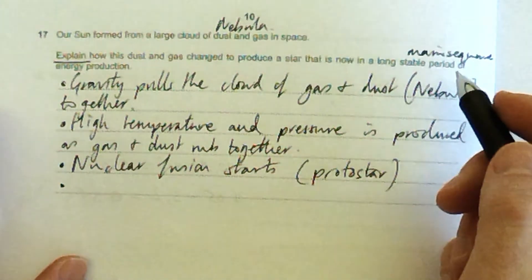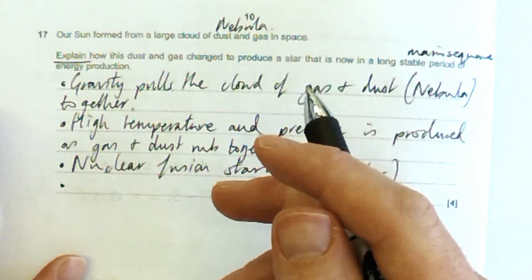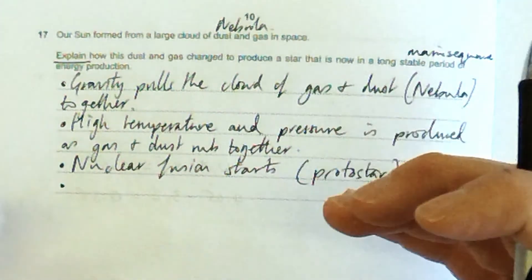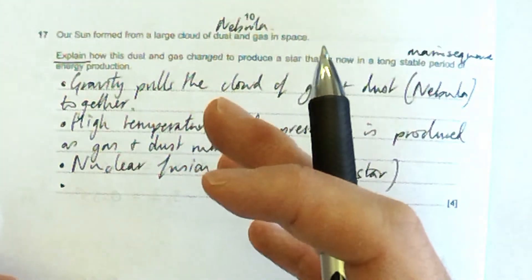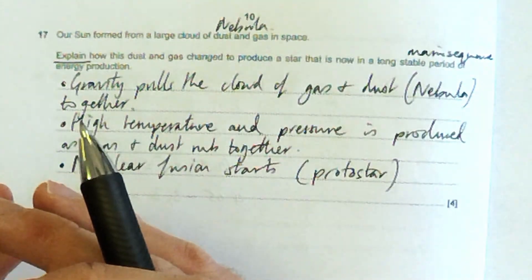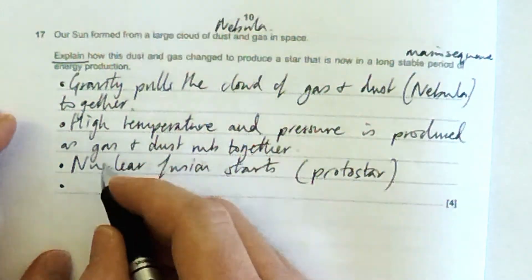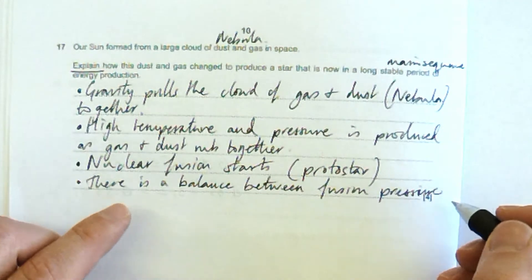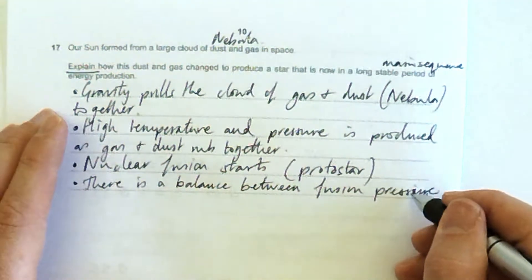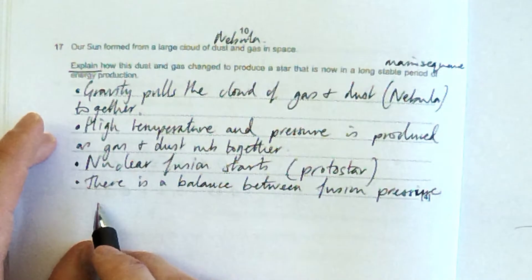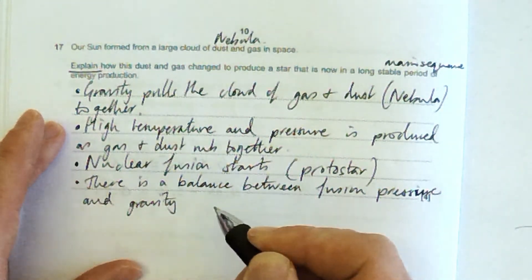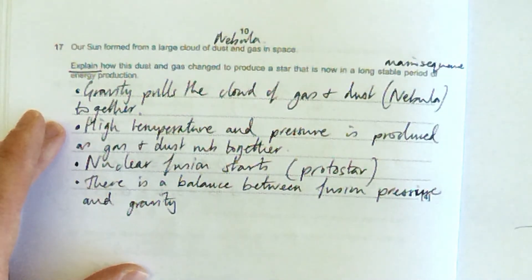Now we just need to detail the main sequence. Eventually there's a balance between the outward force, which we call fusion pressure, and gravity. Although we call it fusion pressure, it is in fact a force — just a type of force named fusion pressure. There is a balance between fusion pressure and gravity, and it's this balance that keeps the star stable.